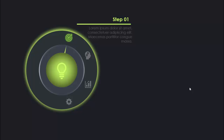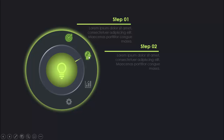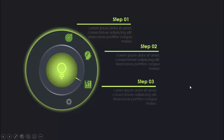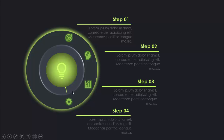In today's tutorial I am going to show you how to create a MOF transition template in PowerPoint. As you can see here I have added four options with four different icons and there's a needle pointing towards the first step. On each click the needle moves to the next option — step two, step three, step four — and you can add detail text for each step. You can also add more options by bringing elements to the center.